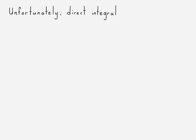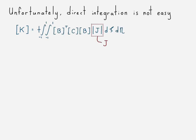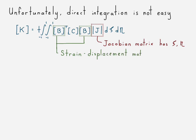And that's all well and good, but direct integration is not so easy because the Jacobian matrix has some linear terms in it. It has the xi and eta. The strain displacement matrix also has xi and eta.